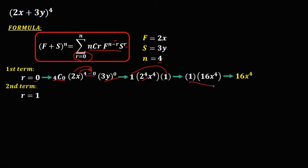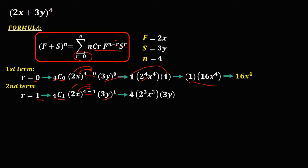For the second term, r now equals 1. We have 4 choose 1, times 2x to the power of 4 minus 1, times 3y to the power of 1. Simplifying: 4 choose 1 is 4, and 4 minus 1 is 3. Distributing gives 2 to the power of 3 and x to the power of 3, and 3y to the power of 1 is just 3y. Multiplying 4 times 3y gives 12y, and 2³ gives 8x³. Then 12 times 8 is 96, so the second term is 96x³y.